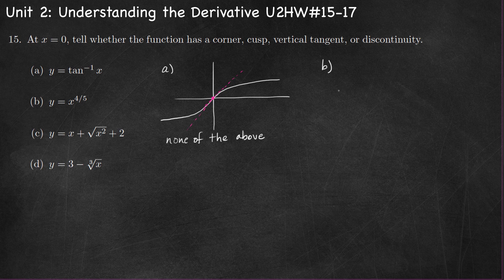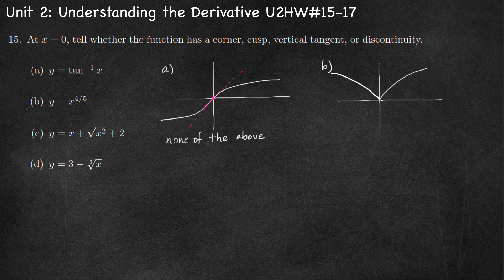Part B, let's look at the graph of y equals x to the power four-fifths. This graph at x equals zero has a cusp. As we approach zero from the left-hand side, the slope is negative and it's getting steeper and steeper. As we approach zero from the right-hand side, the slope is positive and it's getting steeper and steeper. So this is a cusp at x equals zero.